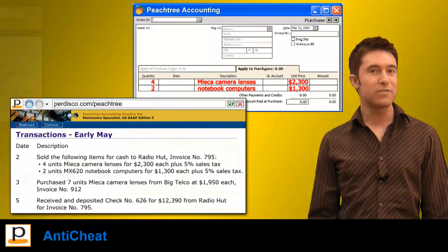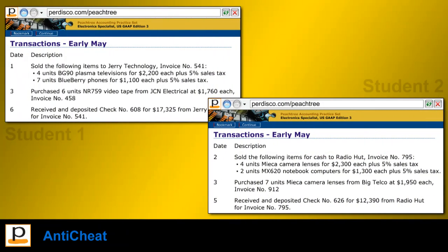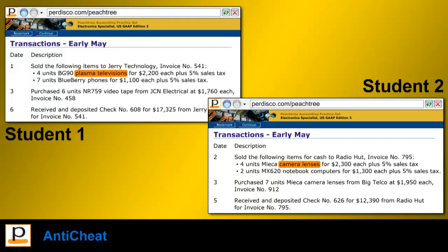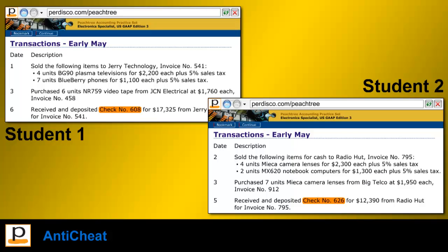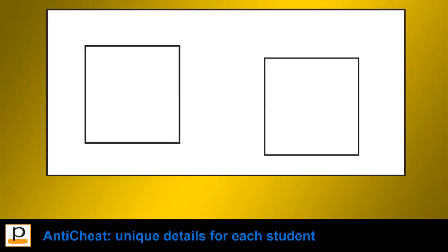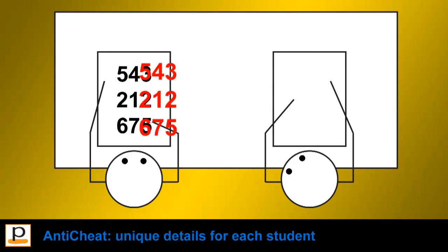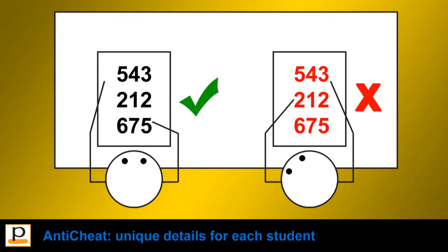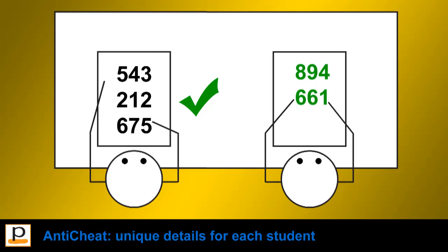They're then provided with a list of transactions for the month of May which they enter into Peachtree. Our exclusive anti-cheat functionality ensures each student's transaction list contains different dates, items, quantities, costs, suppliers, invoice numbers, and check numbers, so that their entire practice set is different to that of any other student. Since students are unable to copy each other's work, they're forced to thoroughly practice and understand the skills essential to accounting with Peachtree.